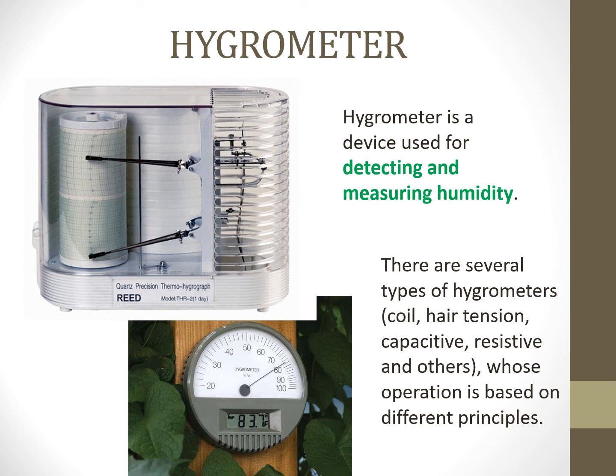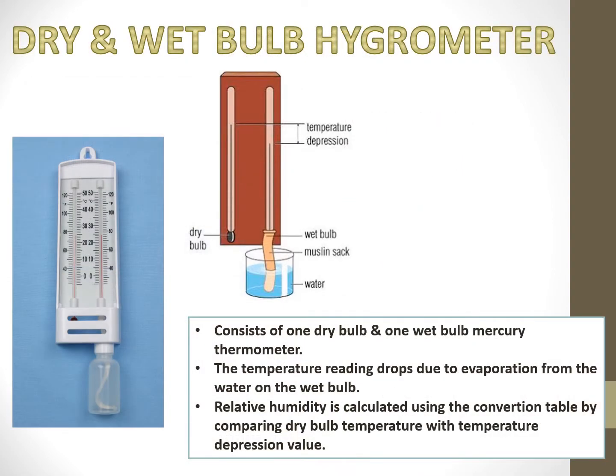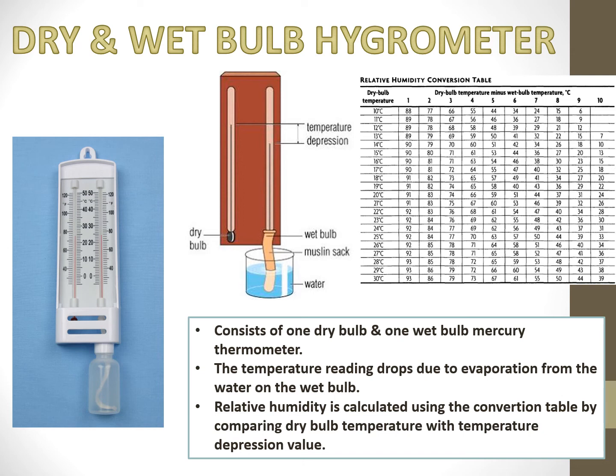A hygrometer is the device used for detecting and measuring humidity. There are several types — coil, hair tension, capacitive, resistive, and more — whose operation is based on different principles. A common way these devices work is by using a material that attracts moisture and changes depending on how hydrated it is. A dry and wet bulb hygrometer is one of the simplest instruments used to measure relative humidity. It uses two mercury thermometers — one with a wet bulb and one with a dry bulb. Evaporation from the wet bulb causes its temperature to drop, and relative humidity is calculated by comparing the two readings using a calculation table.